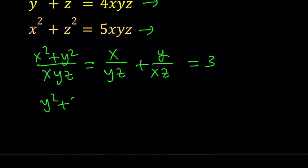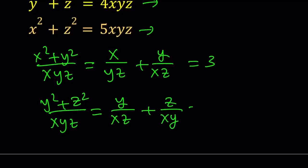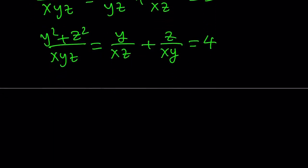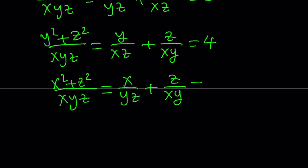Let's go ahead and do it for the other equations as well. y squared plus z squared divided by x, y, z is equal to y over xz plus z over xy. And as you know, that is going to equal 4 from the second equation. And if you do it again, x squared plus z squared divided by x, y, z. Remember, x, y, z does not equal 0. So we can do it. x over yz plus z over xy.